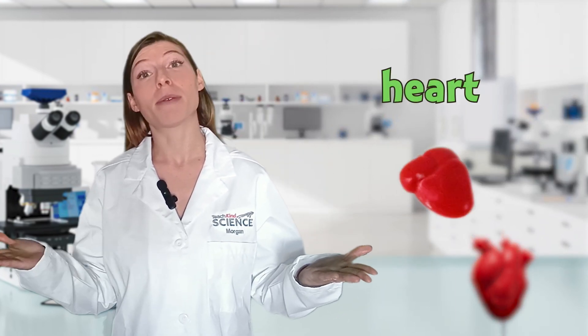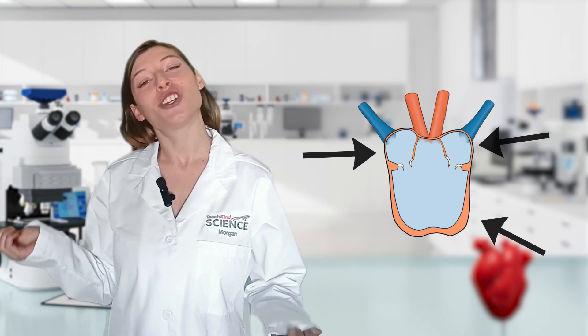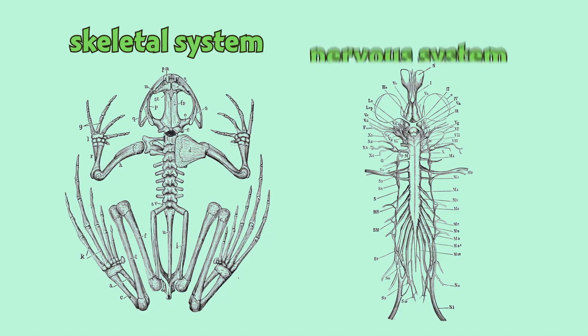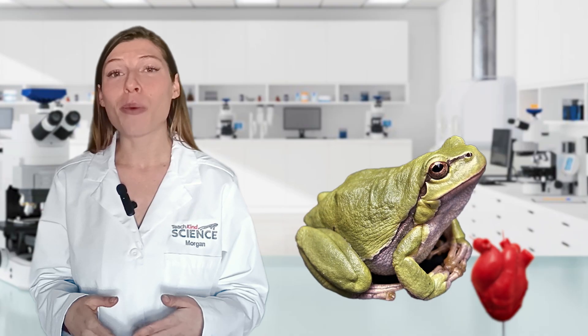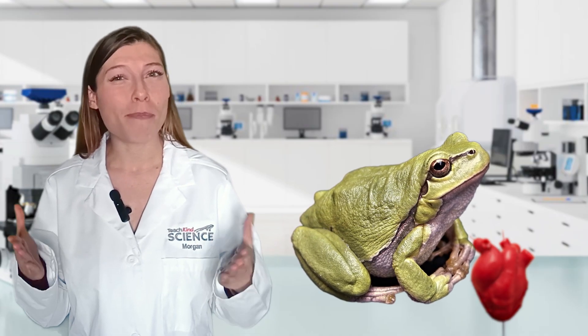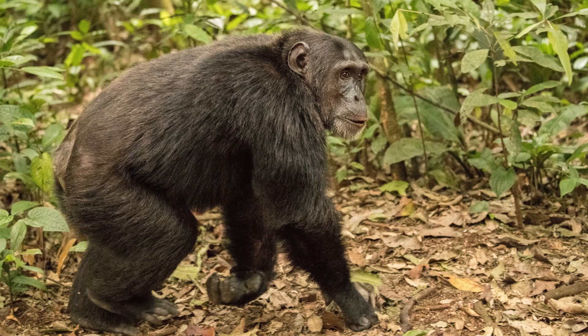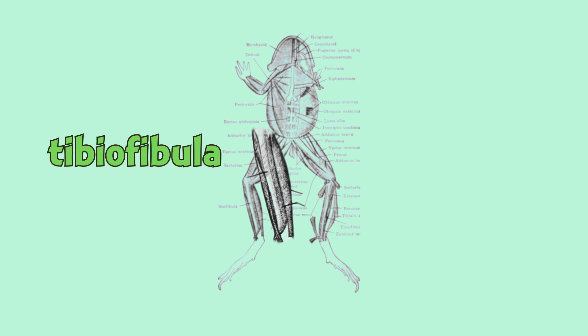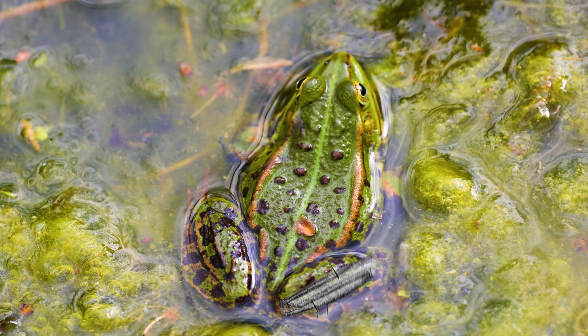Humans and frogs also have similar cardiovascular systems which include a heart pumping blood to the rest of the body, but frogs have a three-chambered heart and humans have a four-chambered heart. We can also compare the skeletal system: frogs are much better jumpers than we are because mammals have both a tibia and a fibula in their lower legs, but frogs specifically have a single shin bone called the tibio-fibula, which is an adaptation for leaping.